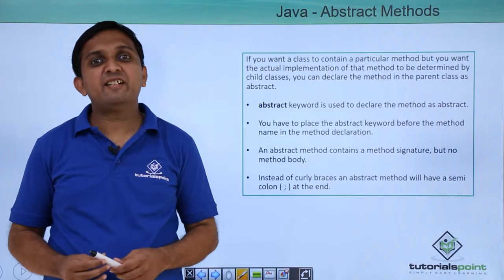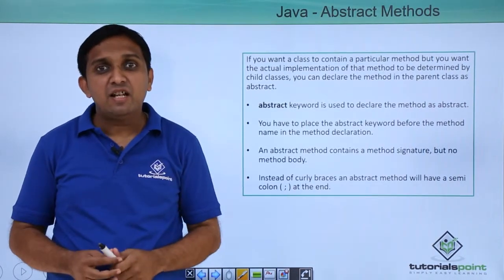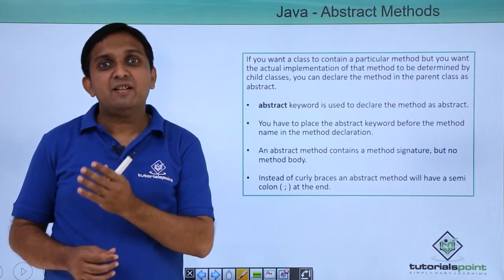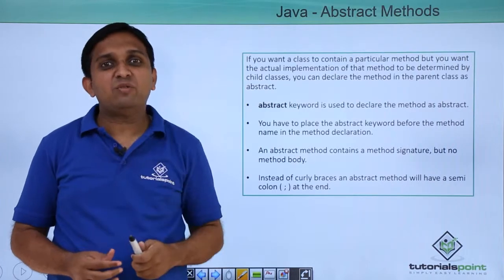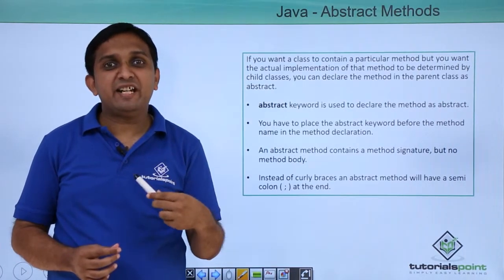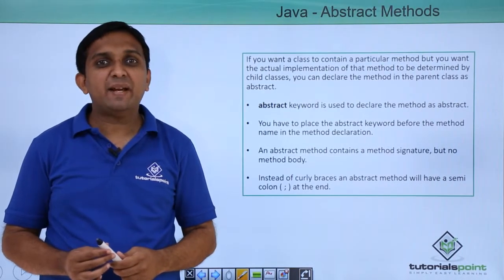Suppose I have considered an example of three classes: shape class, triangle class, and rectangle class. I can calculate area and perimeter for triangle and rectangle, but I cannot calculate that for shape. Though I need to declare those two methods, area and perimeter, in the shape class. So in that case, I have to declare them as abstract.